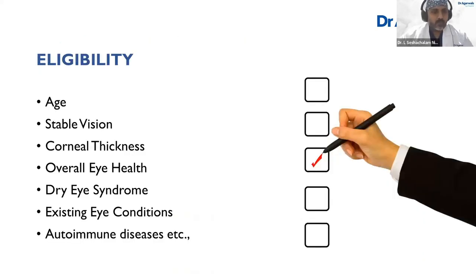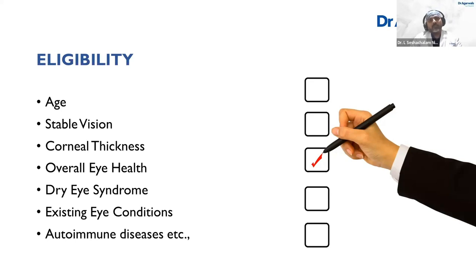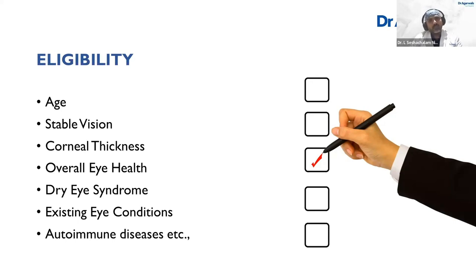Who is eligible for refractive surgery? The first criterion is age — you need to have completed a minimum of 18 years. More importantly, you need a stable refractive error: if your refractive error has not changed by more than 0.5 in the past six months and you are above 18 years of age, you become an eligible candidate for a refractive procedure. But eligibility is different from suitability.